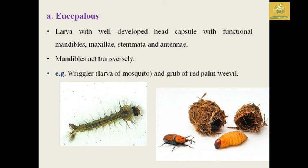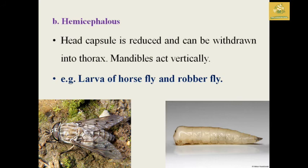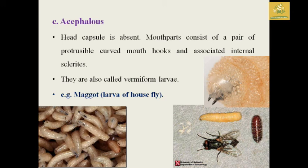In eucephalous larvae, there is a well-developed head capsule with functional mandibles, maxillae, stemmata, and antennae. The mandibles act transversely — for example, wrigglers (larvae of mosquito) and grubs of red palm weevil. In hemicephalous larvae, the head is reduced and can withdraw into the thorax; the mandibles act vertically — for example, larvae of housefly and robber fly. In acephalous larvae, the head capsule is absent; mouthparts consist of a pair of protractile curved mouth hooks. They are also known as vermiform larvae — for example, maggots of housefly.